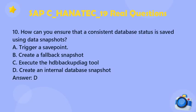Question 10: How can you ensure that a consistent database status is saved using data snapshots? a. Trigger a save point. b. Create a fallback snapshot. c. Execute the HDB backup diag tool. d. Create an internal database snapshot. Answer: d.